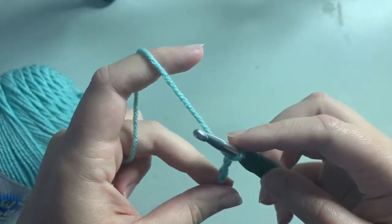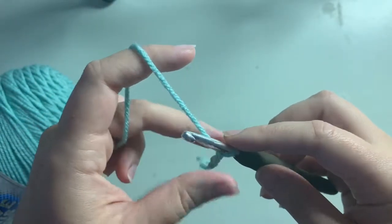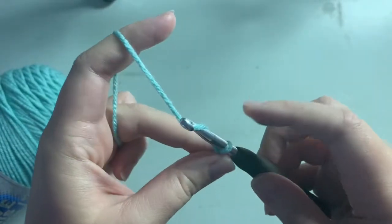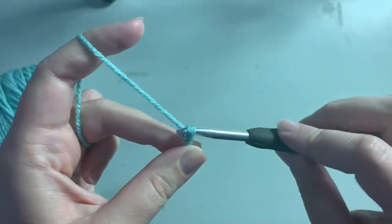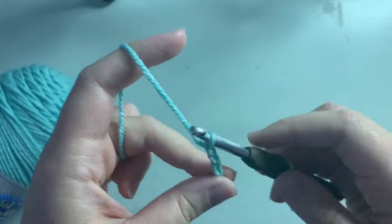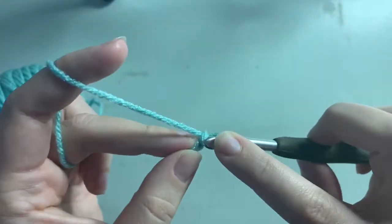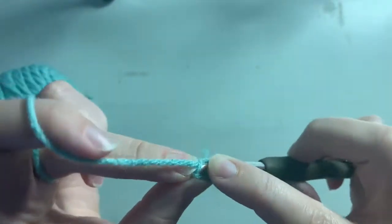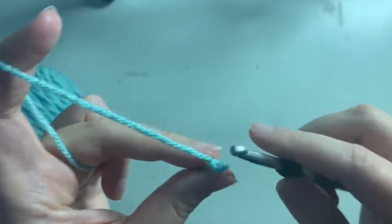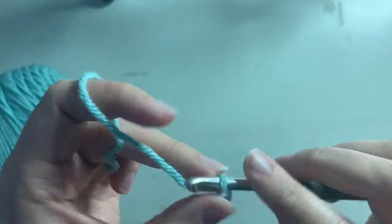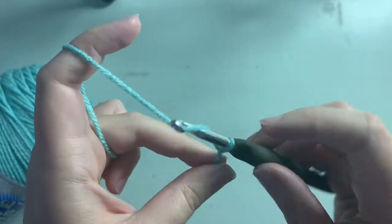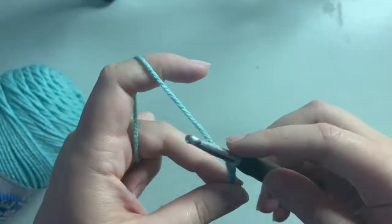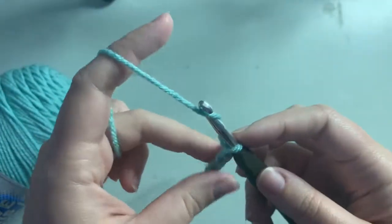The hardest part is making sure that you don't make it too tight because a lot of people tend to want to hold this working yarn really tight and then just kind of force it through there. But when it comes time to work back through it, it's really tight and it's hard to get your hook back into it. So instead of doing that, we'll make sure we have a little bit of play there and pull it through.